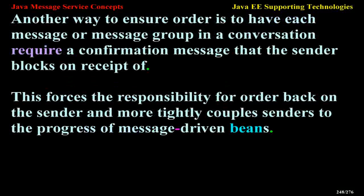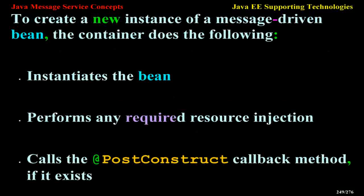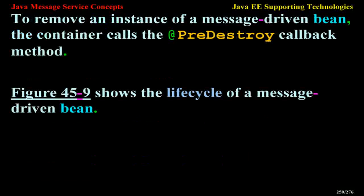To create a new instance of a message-driven bean, the container instantiates the bean, performs any required resource injection, and calls the @PostConstruct callback method if it exists. To remove an instance, the container calls the @PreDestroy callback method. Figure 45-9 shows the lifecycle of a message-driven bean.